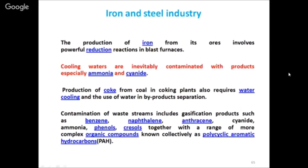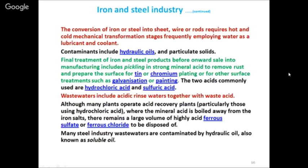In the iron and steel industry, production of iron from its ore involves powerful reduction reactions in the blast furnace. Cooling waters are inherently contaminated with products including ammonia. Production of coke from coal in coking plants uses water cooling, and this wastewater contains chemicals like benzene, naphthalene, and other inorganic compounds. Electroplating and pickling may also be done, meaning all these chemicals are involved in the steel industry wastewater.